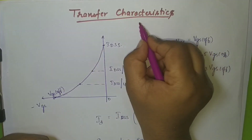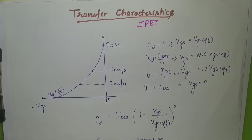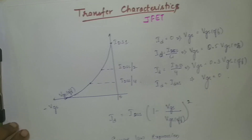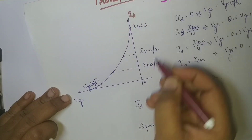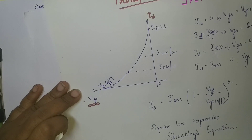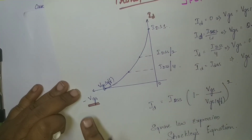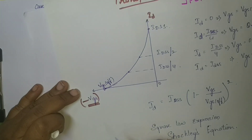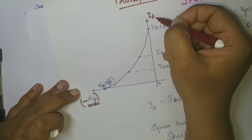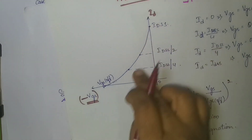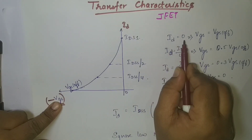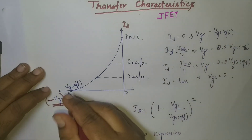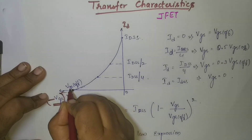The next topic is the transfer characteristic of an N-channel JFET — how it looks and what its parameters are. Here we plot current ID on the y-axis against VGS on the x-axis, whereas in the drain characteristic we plotted current against VDS. VGS is taken as negative here, and ID is on the positive axis. The current remains 0 when VGS equals VGS-off — that is the point from which the current remains zero.